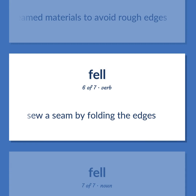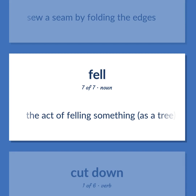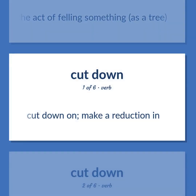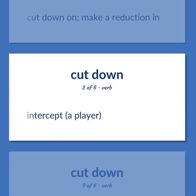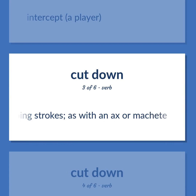Fell: seam made by turning under or folding together and stitching the seamed materials to avoid rough edges. Sew a seam by folding the edges. The act of felling something, as a tree. Cut down on — make a reduction in. Intercept a player.